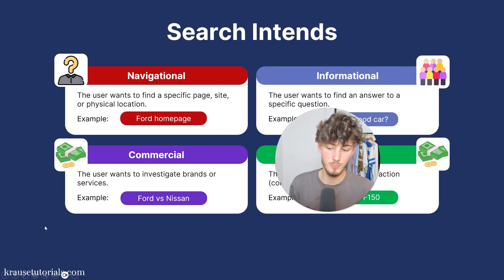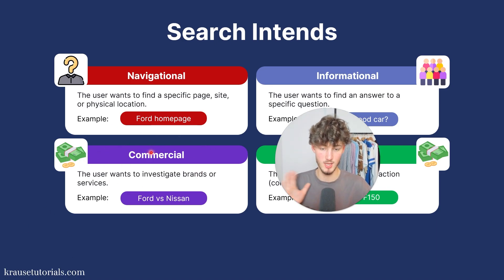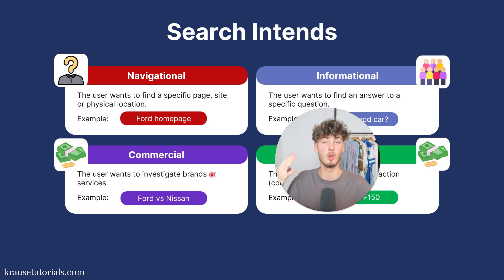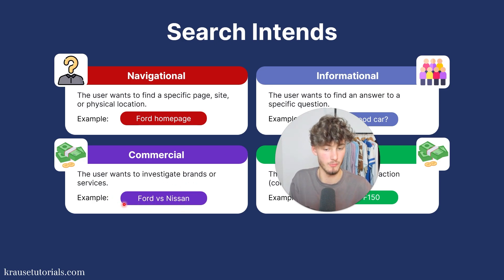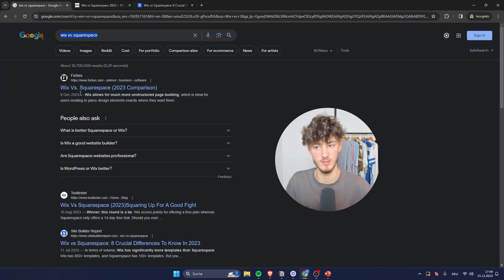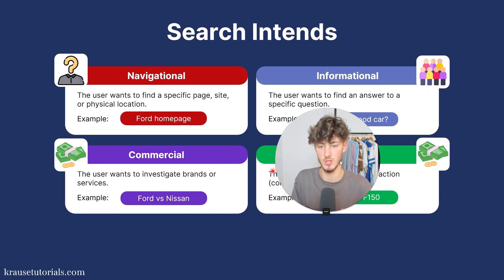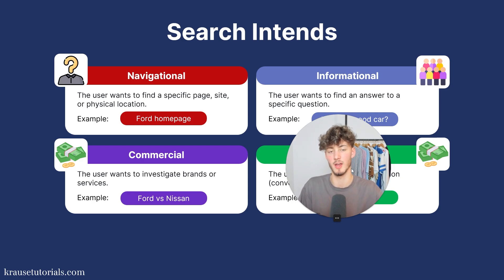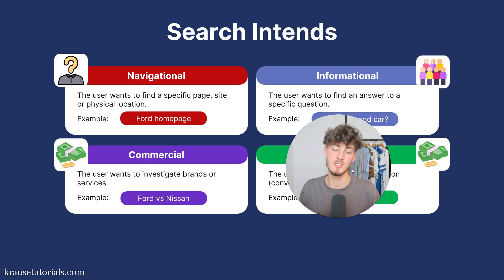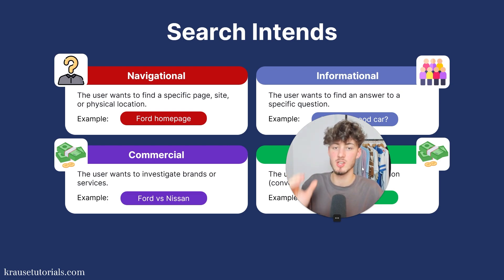The third type would be commercial keywords, also called commercial investigation keywords, because usually these keywords compare and investigate brands or services. Some examples would be "Ford versus Nissan" or "Wix versus Squarespace." Commercial investigation keywords are great for comparing either your own service or different service providers, because you can quite easily convert these visitors to paying customers.